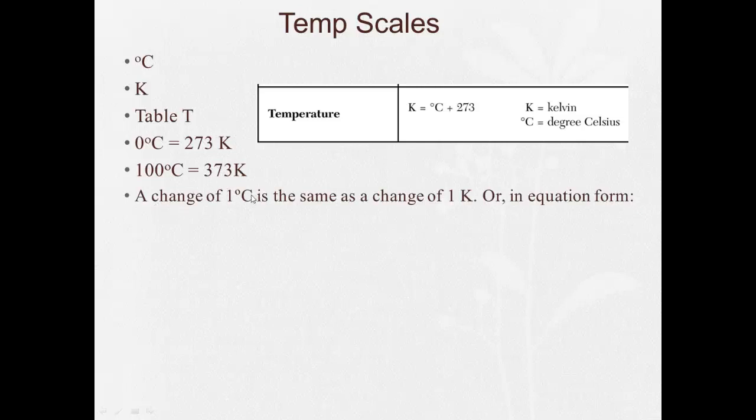And a change of one degree Celsius is the same as a change of one Kelvin. Or in equation form, it's delta, it's a Greek letter delta, and it means change. So a change of one degree Celsius is equal to a change of one Kelvin. And we go back to the scale here. If Kelvin is equal to degrees Celsius plus 273, degrees Celsius is equal to Kelvins minus 273. And we have to be able to do both of these. And we have done these before.